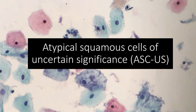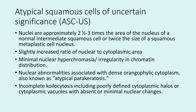Specifically for the ASCUS category, nuclei are approximately two and a half to three times the area of the nucleus of a normal intermediate squamous cell, or twice the size of a squamous metaplastic cell nucleus, with a slightly increased ratio of nuclear to cytoplasmic area, minimal nuclear hyperchromasia, and irregularity in the chromatin distribution. You can also see incomplete koilocytosis, including poorly defined cytoplasmic halos or cytoplasmic vacuoles with absent or suboptimal nuclear changes — changes that fall short of a low-grade diagnosis.